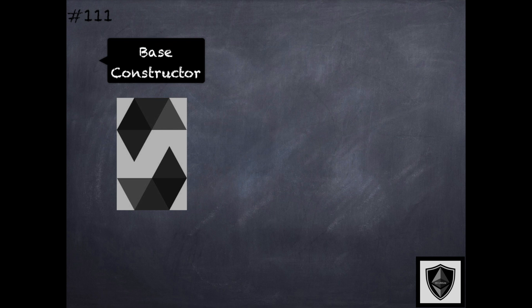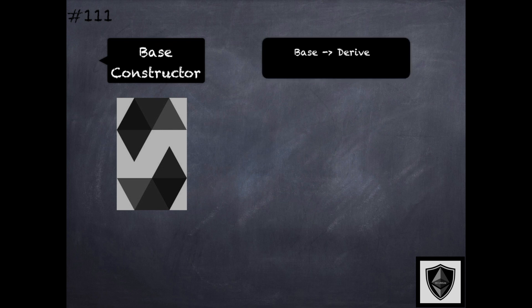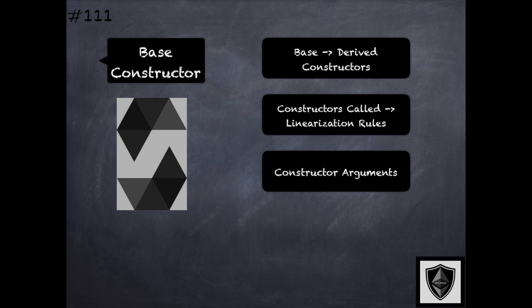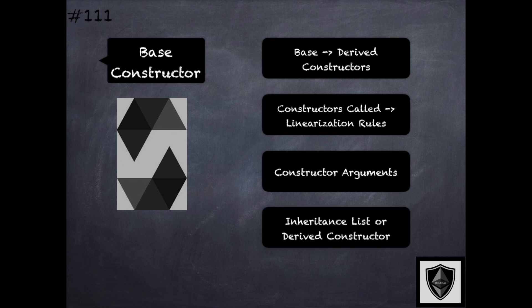With inheritance, when you have classes deriving from other base classes, both the base and derived classes could have constructors. The constructors of all the base contracts will be called following the linearization rules. If the base constructors have arguments, then the derived contracts need to specify those arguments, and this can be done either in the inheritance list of the derived contract or explicitly within the derived constructor itself. Look at illustrative examples in the references to understand the differences between the two ways of specifying base constructors that have arguments.